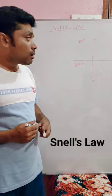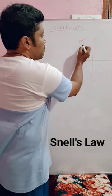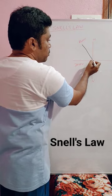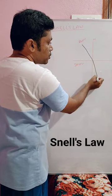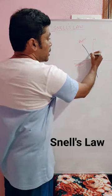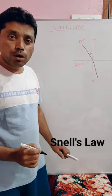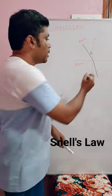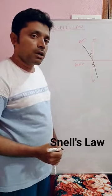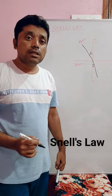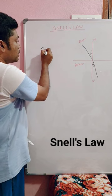Do you know what is Snell's law? When a light ray travels from rarer to denser medium, it bends towards the normal. The incident ray makes an angle with the normal that is called the angle of incidence, and the refracted ray makes an angle with the normal that is called the angle of refraction.